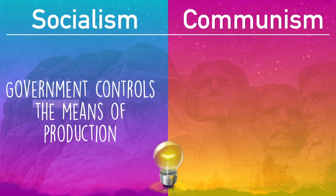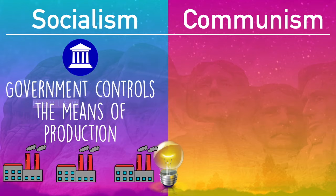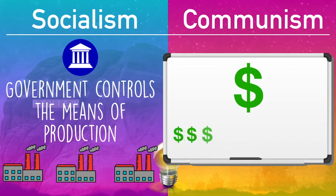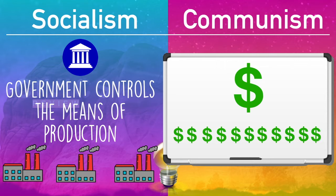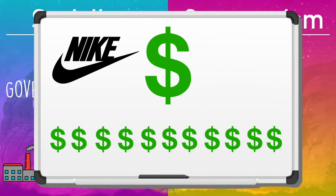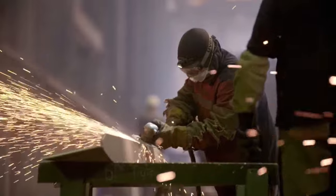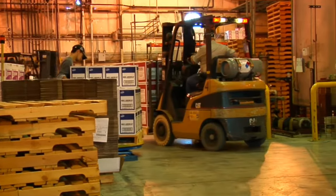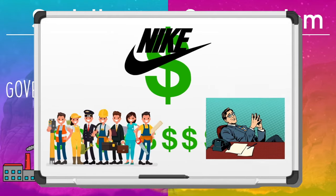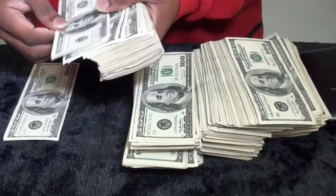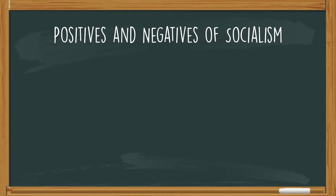In a country with socialism, the government controls the businesses that produce goods. The main reason is to balance the wealth of the country so we don't have large differences between the wealthiest and poorest people. For example, Nike makes $30 billion or more per year and has an owner who makes the majority of that money, while thousands of employees make significantly less. Under socialism, the government would run Nike, design the shoes, set production and price, then distribute that wealth to citizens fairly or equally. Economic equality is a great goal, but there are positives and negatives to socialism.